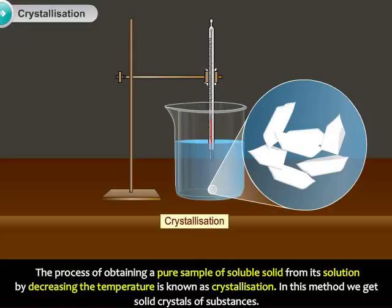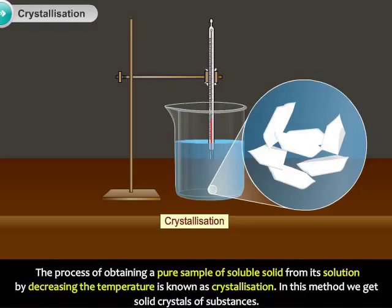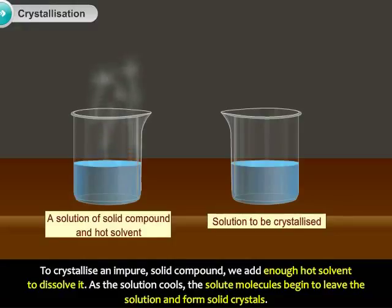In this method, we get solid crystals of substances. To crystallize an impure solid compound, we add enough hot solvent to dissolve it.